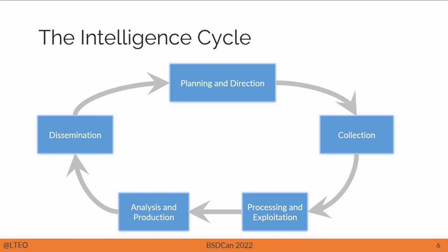Threat intelligence is also the intelligence cycle. If you search for intelligence cycle, you'll see various versions. The one from SANS divides it into five phases: planning and direction, where we plan and gather requirements of what we want intelligence to tell us; collection, where we collect the data; processing, where we put data in various buckets and do data cleanup; analysis, where we analyze the processed data and produce intelligence; and finally dissemination, where we send intelligence back to the stakeholders who requested it.